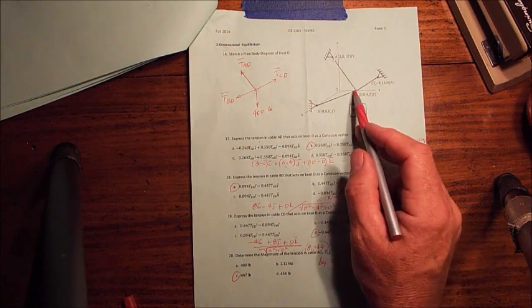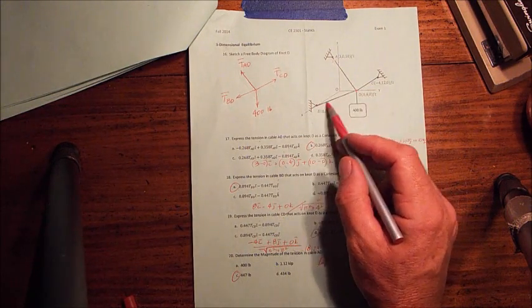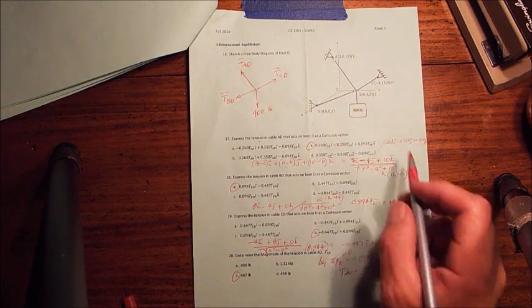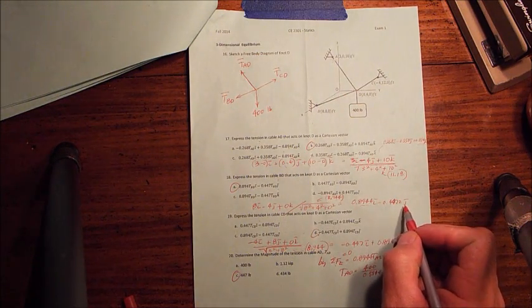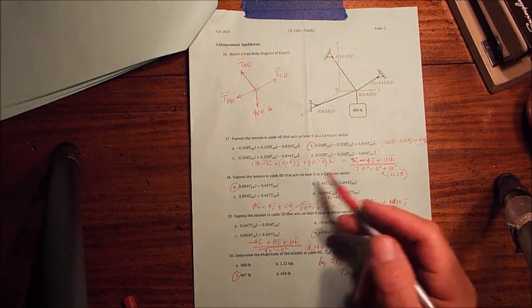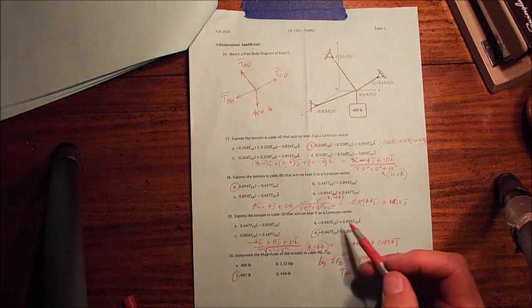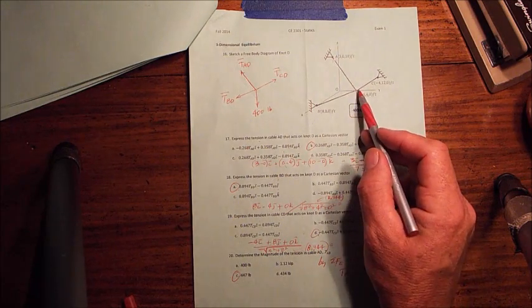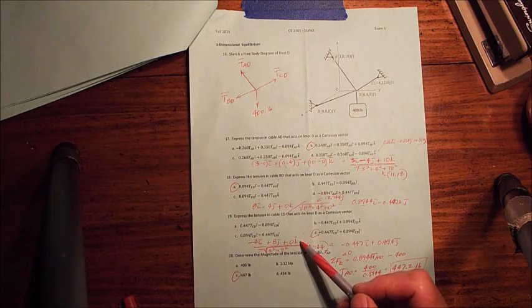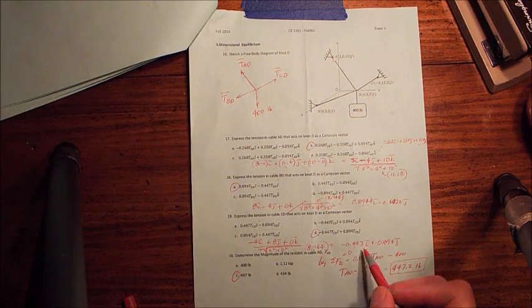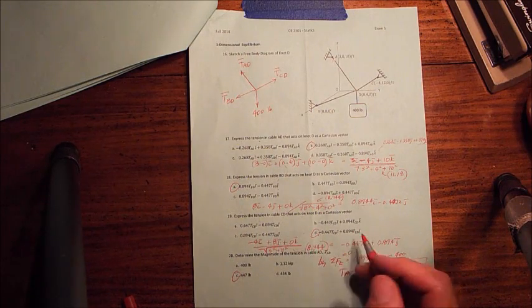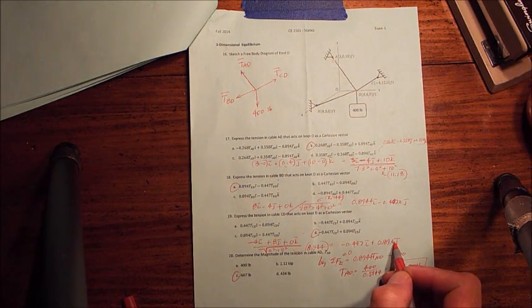Do the same thing for BD and CD. Position vector from D to B is this, magnitude is this, square root of the sum of the squares. Unit vector looks like this. Note that it has no K component, no Z component, so this cable and the vector lies in the XY plane. That'll come into play here in a second. And this is the unit vector, so that's answer A. Number 19, same thing for CD, it also lies in the XY plane. Here's my position vector, square root of the sum of the squares. Here's my unit vector, I multiply those by TCD, all I've got is an I and a J component.